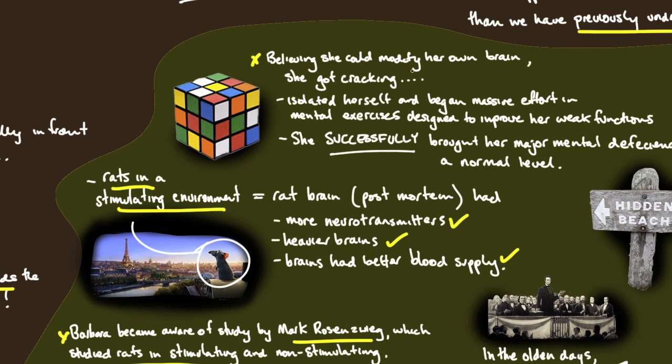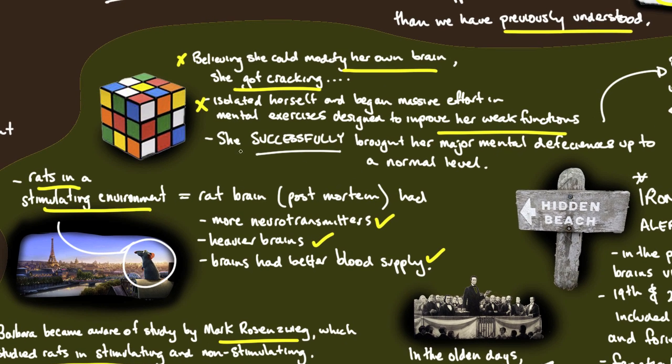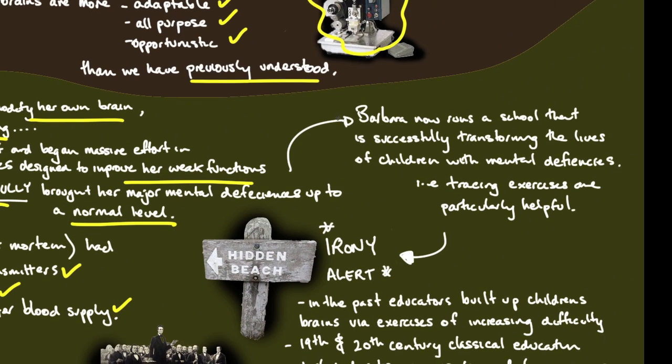This piqued Barbara's interest. Believing she could modify her own brain, she isolated herself and began a massive effort in mental exercises designed to improve her weak functions. It worked. She successfully brought her major mental deficiencies up to a normal level.